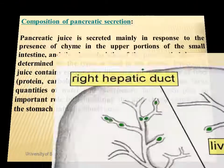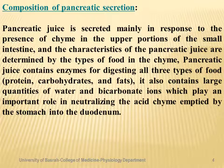Pancreatic juice is secreted mainly in response to the presence of chyme in the upper portion of the small intestine, and the characteristics of the pancreatic juice are determined by the types of food present in the chyme. Pancreatic juice contains enzymes for digestion of all types of food — protein, carbohydrates, and fats — and also contains large quantities of water and bicarbonate ions, which play an important role in neutralizing the acidic chyme emptied by the stomach into the duodenum, in addition to water and different types of electrolytes.